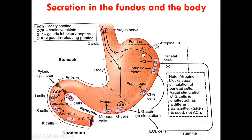For the G cells to produce gastrin, the vagus nerve — the parasympathetics — releases a different neurotransmitter here: not acetylcholine, but gastrin-releasing peptide. Gastrin-releasing peptide stimulates the G cells to produce a lot of gastrin. The G cells can also be stimulated by byproducts of protein digestion like peptides and amino acids, which also stimulate the G cells to produce gastrin.